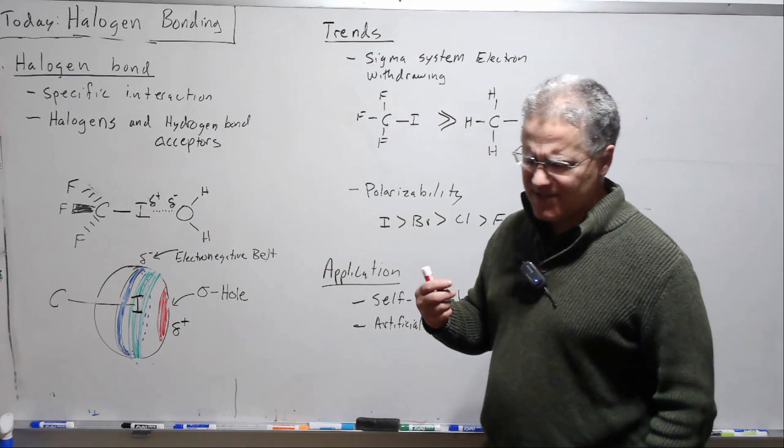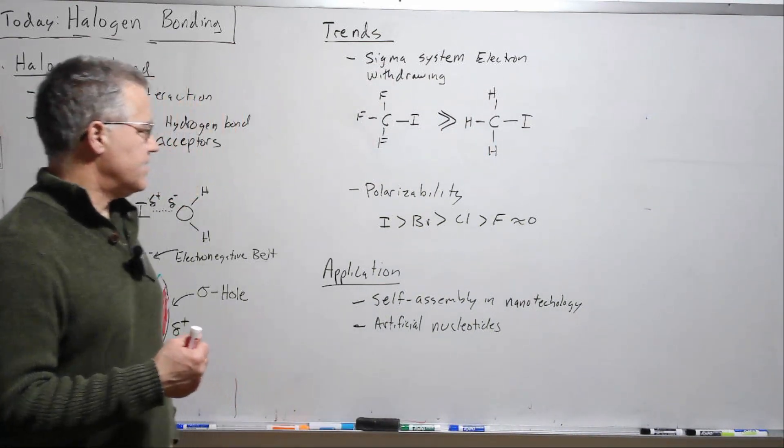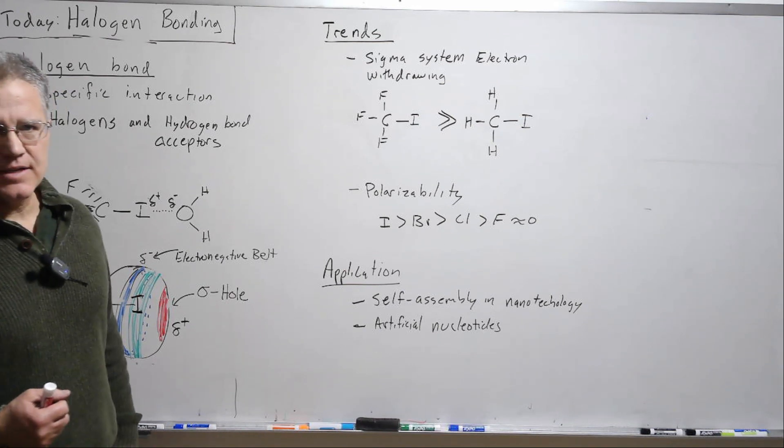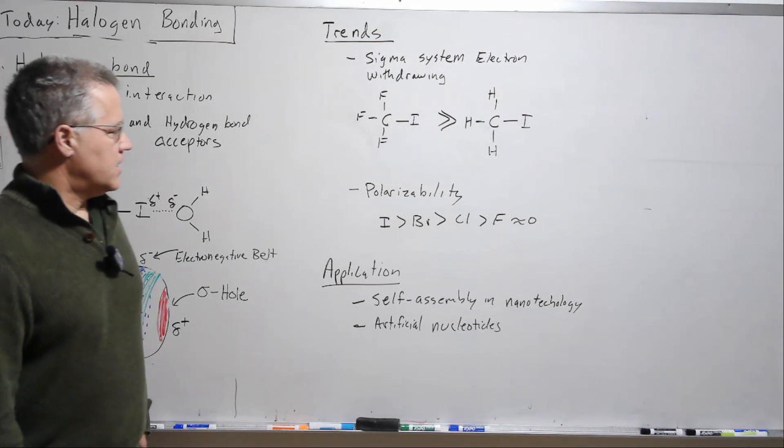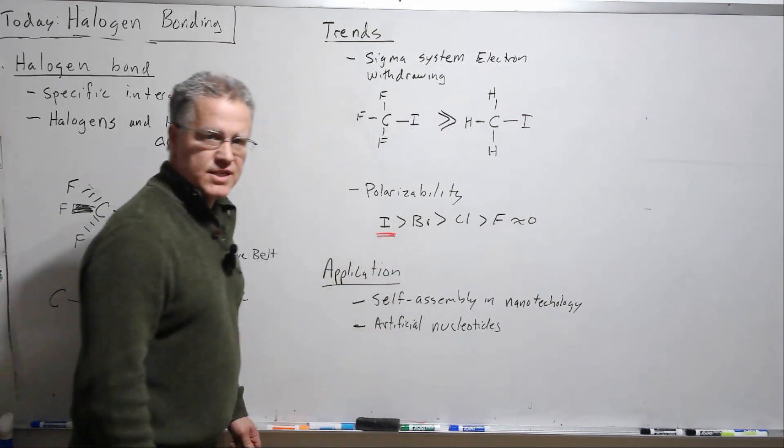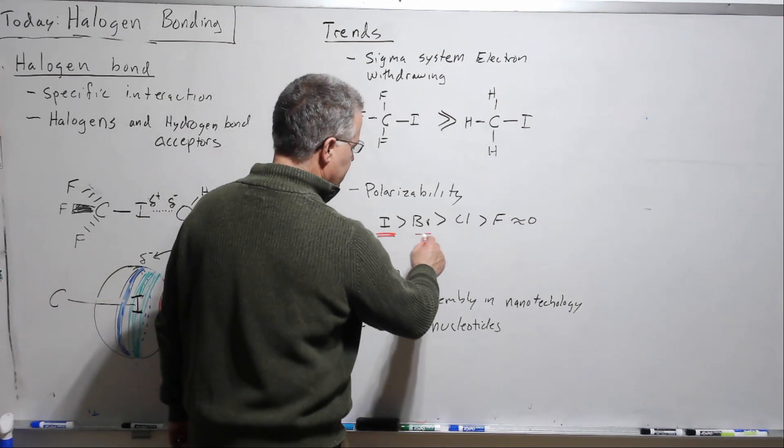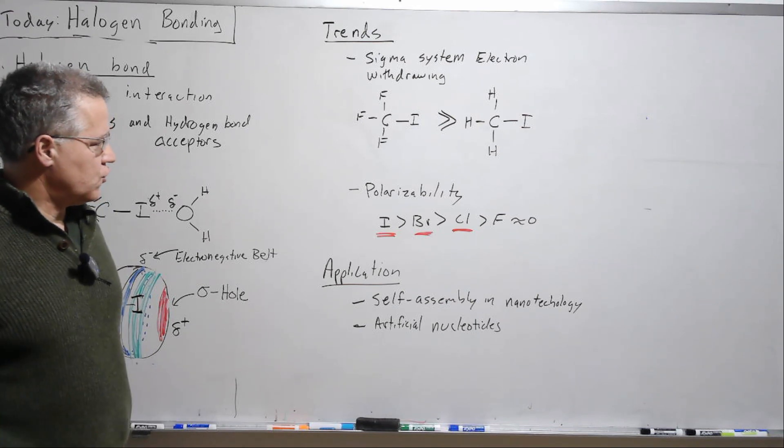And fluorine, as far as I know, I don't think fluorine really is involved in halogen bonding. I might be wrong on that, but I haven't come across that in the literature. Definitely iodine strongest. I have seen some halogen bond studies with both bromine and chlorine.